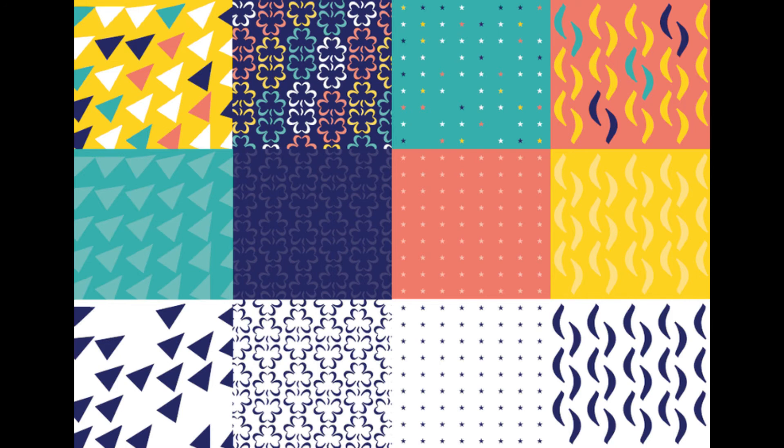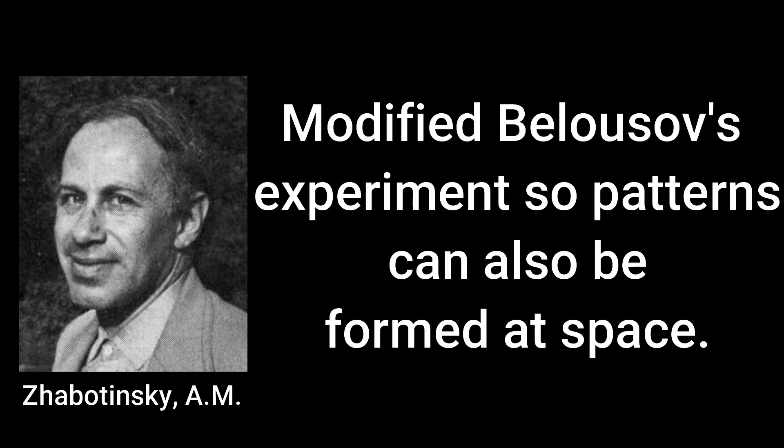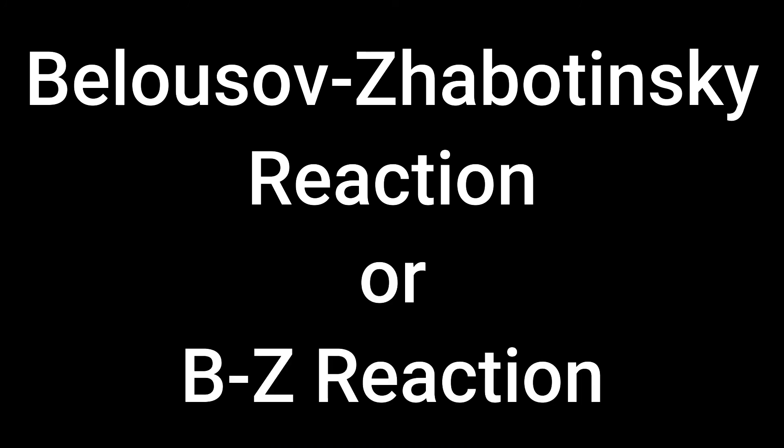This explains why we see different patterns around us. The Russian chemist Belousov discovered a chemical reaction that spontaneously formed patterns from nothing. Another Russian chemist, Zhabotinsky, modified Belousov's experiment so patterns could also be formed in space. Together their experiments formed a reaction called the Belousov-Zhabotinsky reaction, or BZ reaction for short.